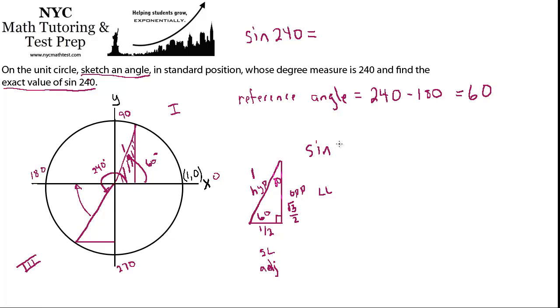So we're interested in the sine of 60, which is opposite over hypotenuse, which is root 3 over 2 over 1. So anything over 1 is itself. That's just root 3 over 2. So what we just found was the exact value of the sine of 60. And now all we have to do is just make sure about the sign, whether this should be positive or negative, and that will give us the exact value of the sine of 240.